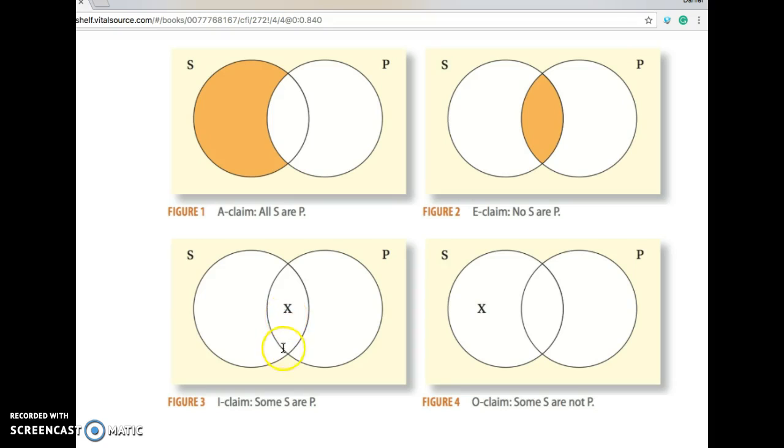X says there's at least one S that's also a P. Some S are not P, we use an X outside here saying there's at least one S that is not a P.